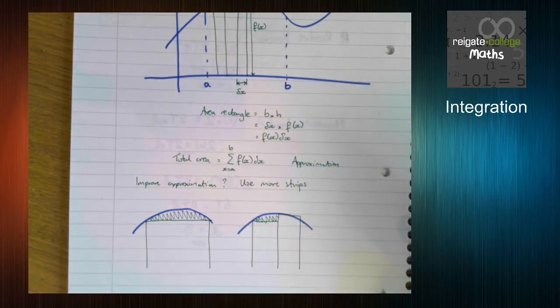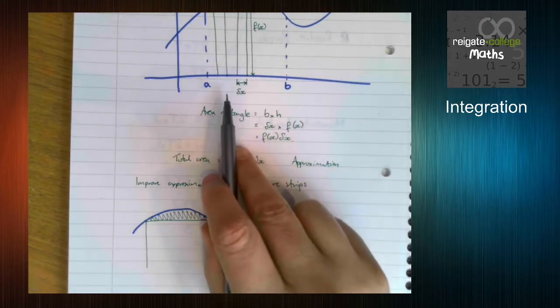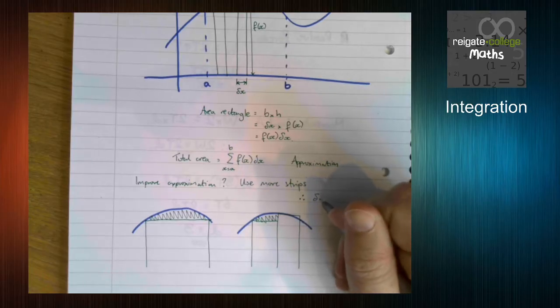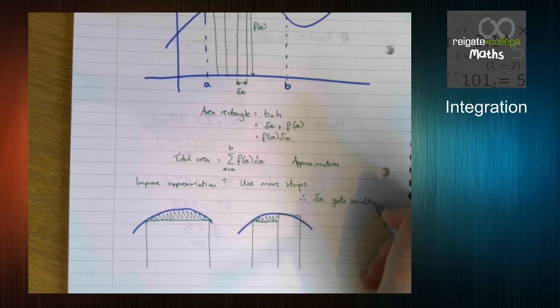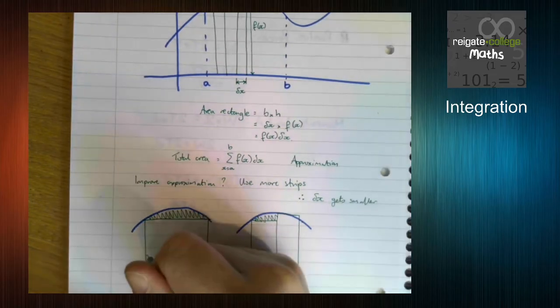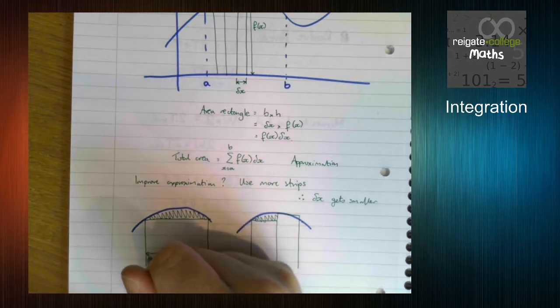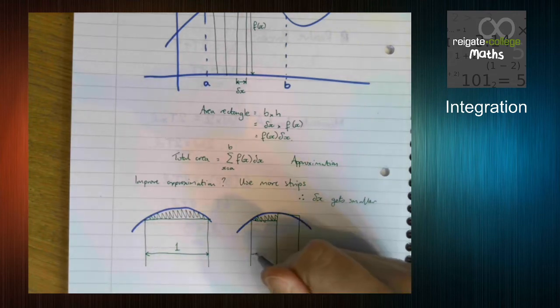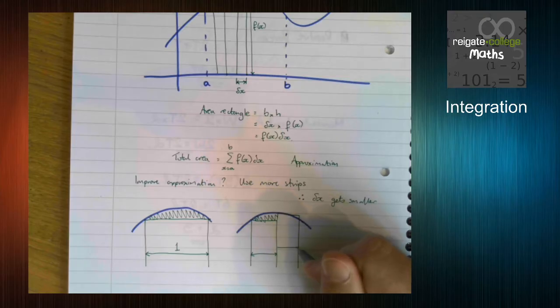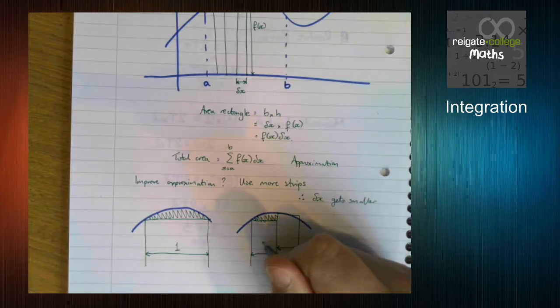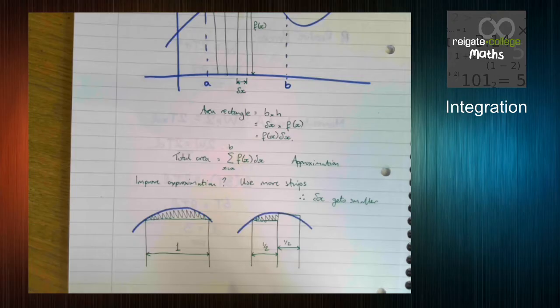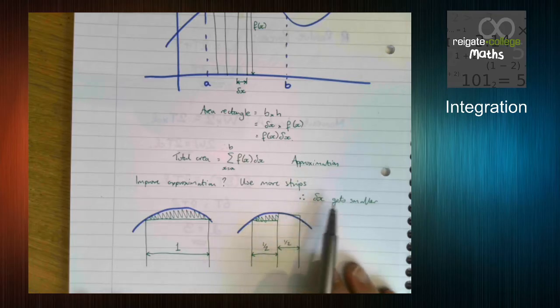Well, what does this mean for our delta x? Which means delta x gets smaller. If you can't see that, let's assume for the sake of argument that this distance is one. So we've used one rectangle. Here, we've used two rectangles, and they're the same width. So each of these is a half. If we use more smaller rectangles, maybe it'll be a quarter. So the width of our rectangle is getting smaller every time. So delta x gets smaller.